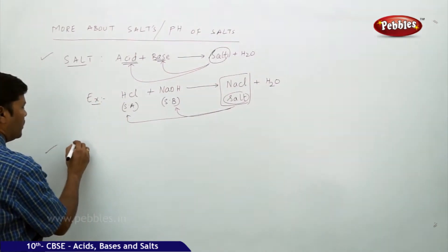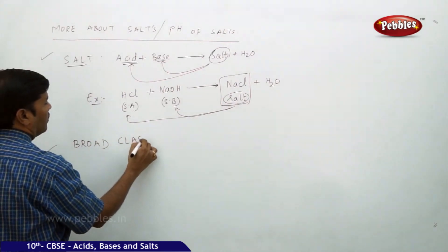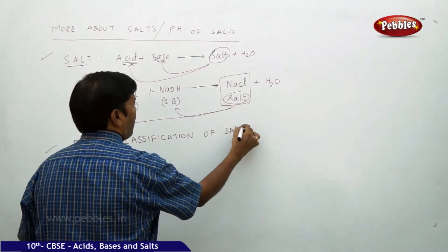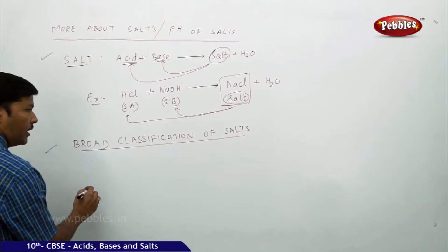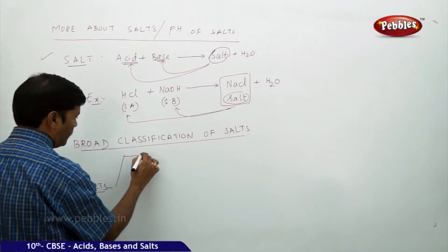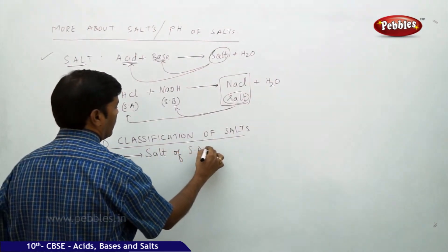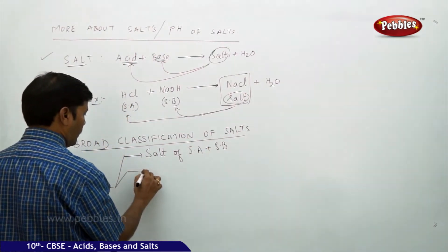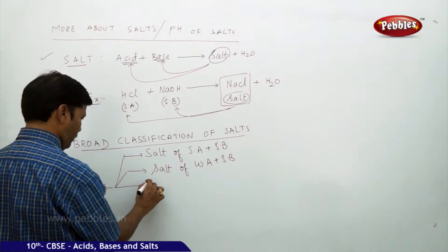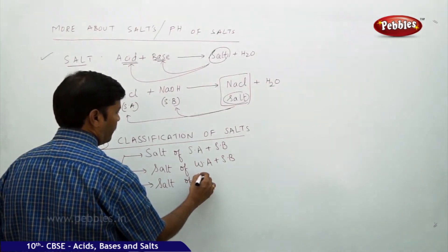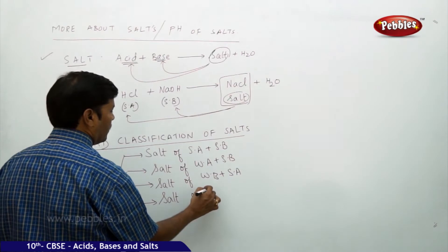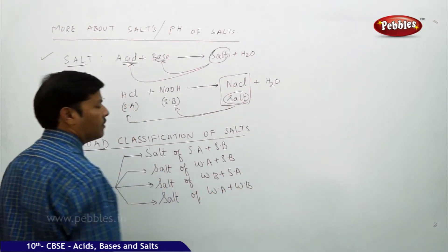Based on this, the broad classification of salts is divided into four types: salt of strong acid plus strong base, salt of weak acid plus strong base, salt of weak base plus strong acid, and salt of weak acid plus weak base.